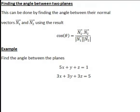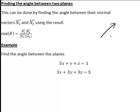Let's have a look at how we can find the angle between two planes. This can be done if we find the angle between their normal vectors n1 and n2 using the usual result for the angle between two vectors.